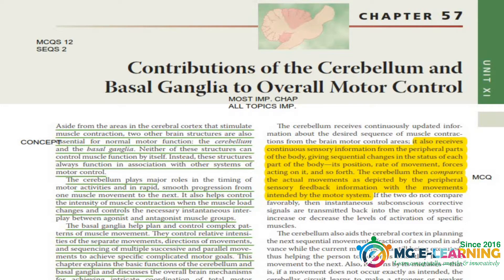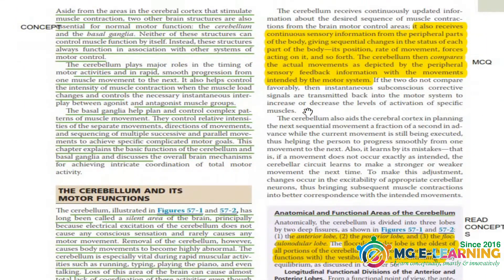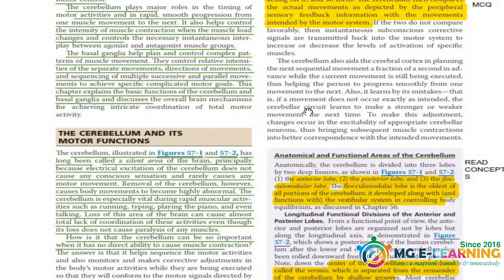First of all, the table of specification: there are 12 MCQs from this whole unit and 2 SEQs in the paper. The first topic is just for your reading — you have to read it for your concepts. Otherwise there is nothing important for your paper SEQs or MCQs. Then is the cerebellum and its motor functions — this is an important topic.